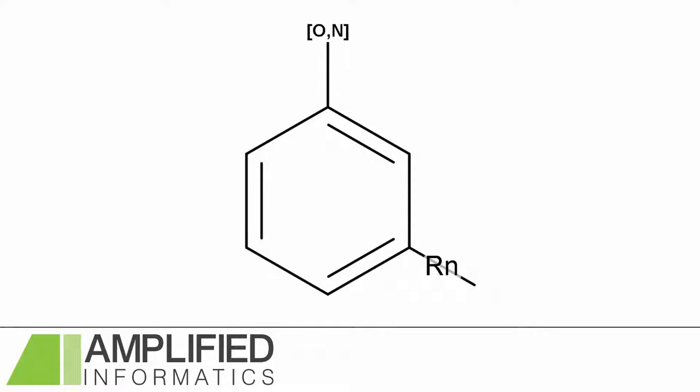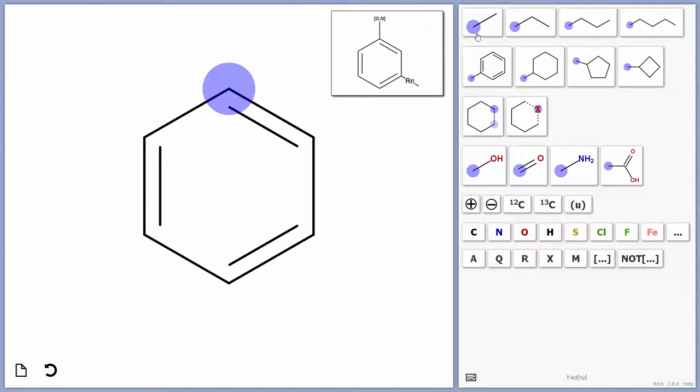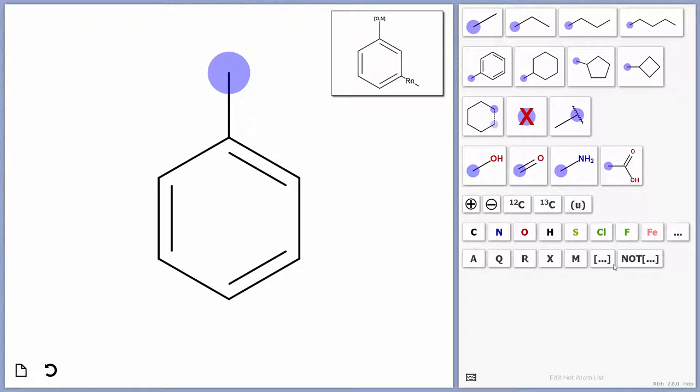And then, on the bottom right, we have a ring bond, and that means that that bond must be present and in a ring in the queried structures. So it's relatively simple. We start out with a normal methyl group, then we can specialize that into an atom list.